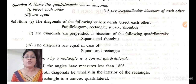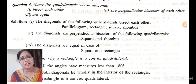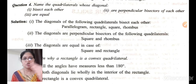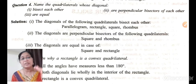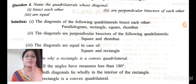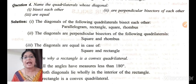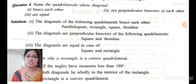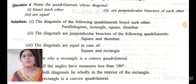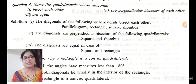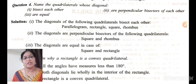Next question: which quadrilaterals have diagonals that are perpendicular bisectors of each other? A bisector divides into two parts, and a perpendicular bisector means they intersect at 90 degrees. That is the case for a square and a rhombus — when the diagonals bisect, the angle formed is 90 degrees.